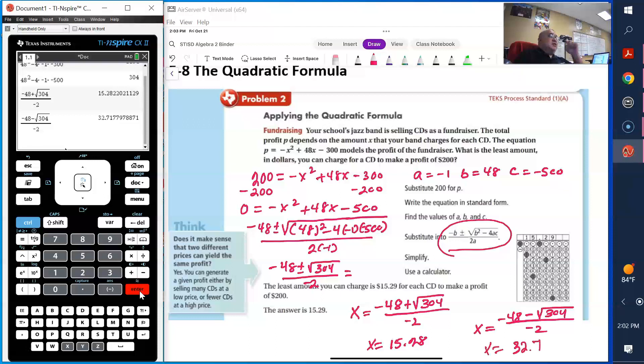And that's 32 dollars and 71 cents. So I think it was asking how much, what's the least amount that you can charge? It would have to be $15.28 for each CD to get a profit of $200.